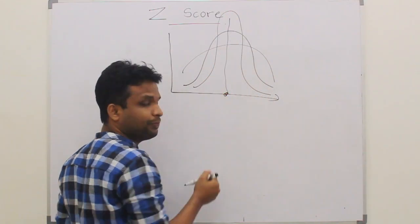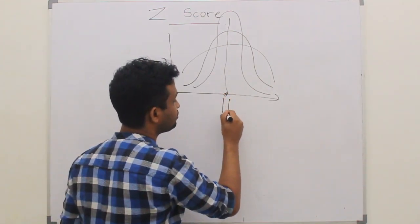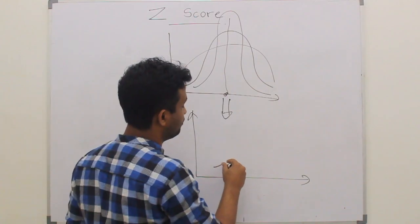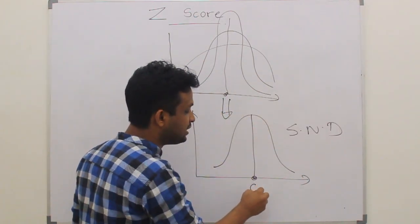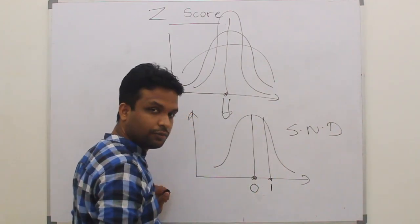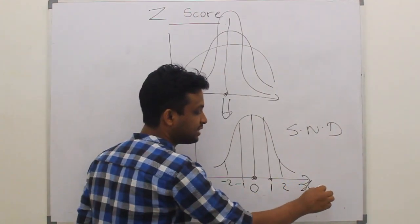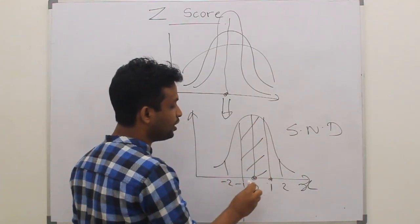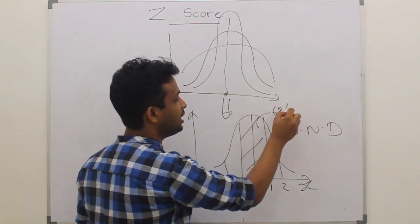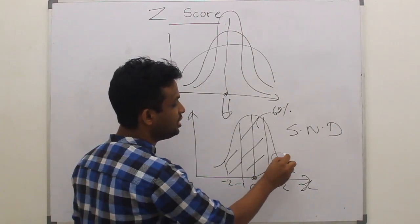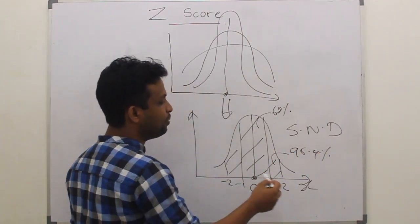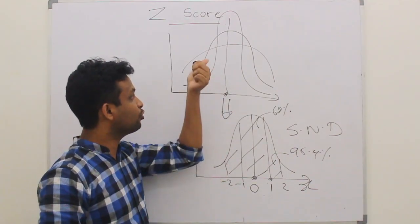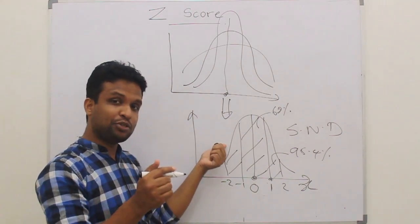You can have several different normal distributions with different means, but in the process of standardization you create a distribution called the standard normal distribution. In the standard normal distribution the mean is 0 and the standard deviation is 1, with standard deviations on the x-axis. Mean plus or minus 1 SD covers approximately 68%, mean plus or minus 2 SD approximately 95.4%, and mean plus or minus 3 SD approximately 99.7%. This process of transformation from normal distribution to standard normal distribution is what I will discuss now.